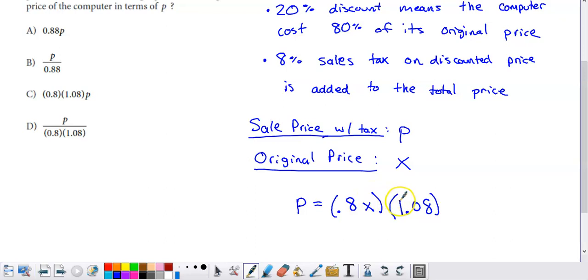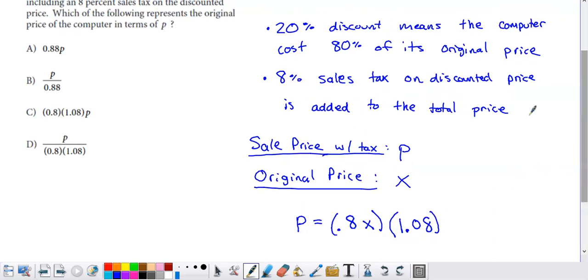I want to multiply it by 108%, right? I'm paying 100% of this plus an additional 8%. So how are we going to use this to determine what X equals? Because that's really what we're asked to do, right?